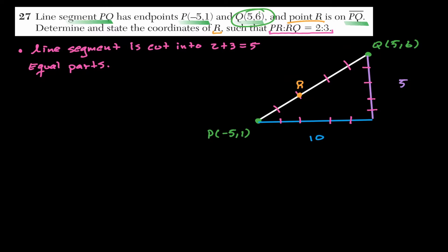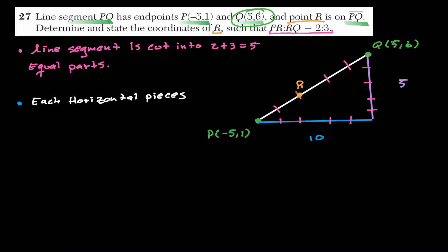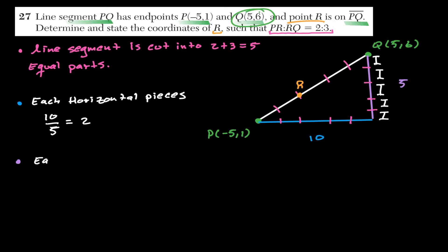Now let's find the length of each of the 5 equal horizontal pieces: the total horizontal length is 10, so each piece is 10 ÷ 5 = 2. For the vertical pieces: total length is 5, so each piece is 5 ÷ 5 = 1.